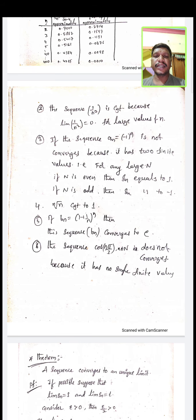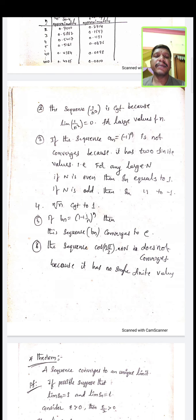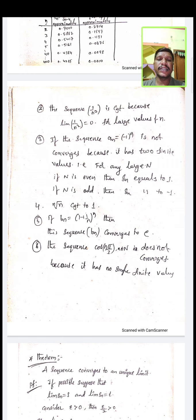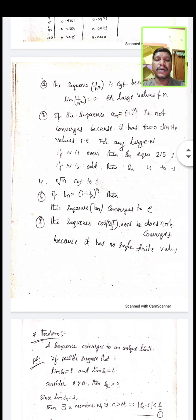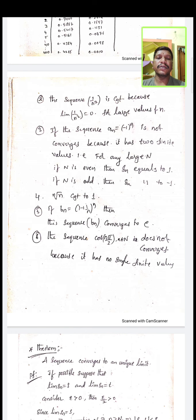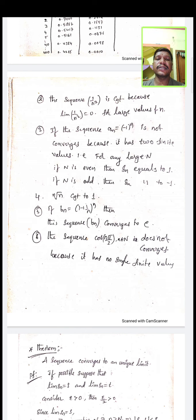Third example: the sequence A_N = (-1)^N is not convergent because it has two finite values. For large values of N, if N is even the sequence equals 1, and if N is odd the sequence equals -1. There is no particular single finite value, so the sequence A_N = (-1)^N is not convergent.